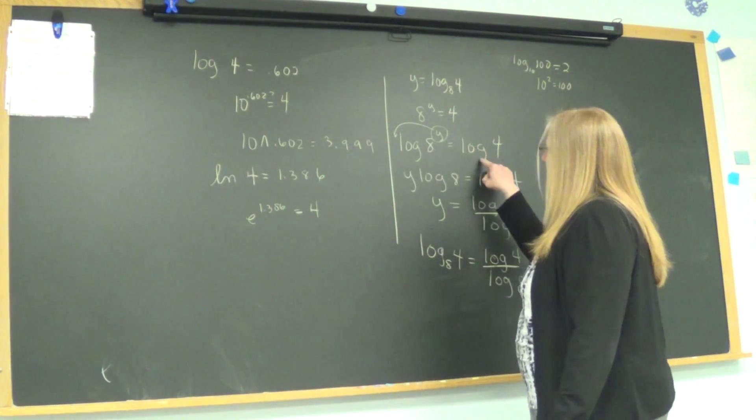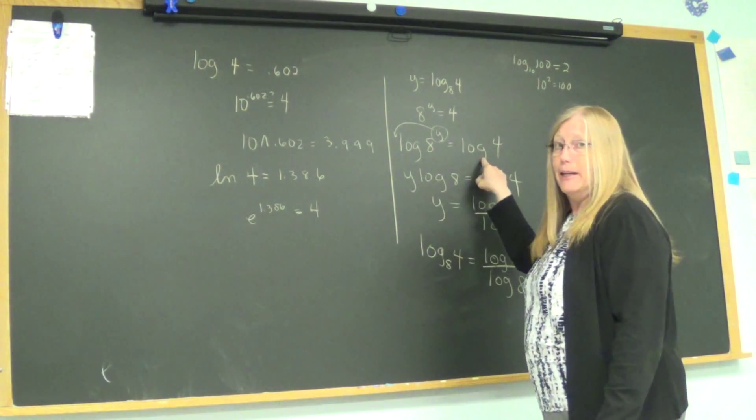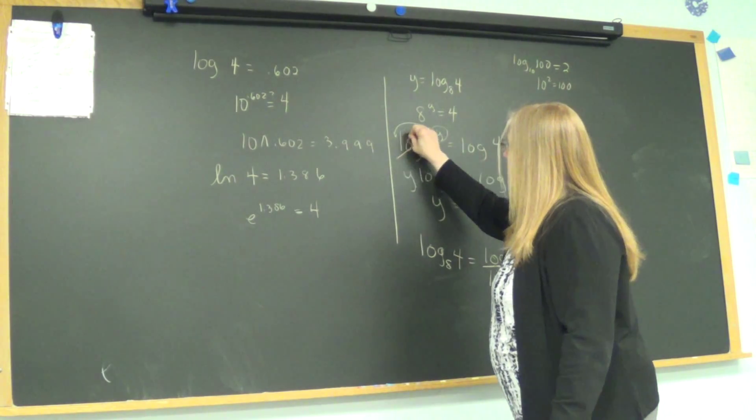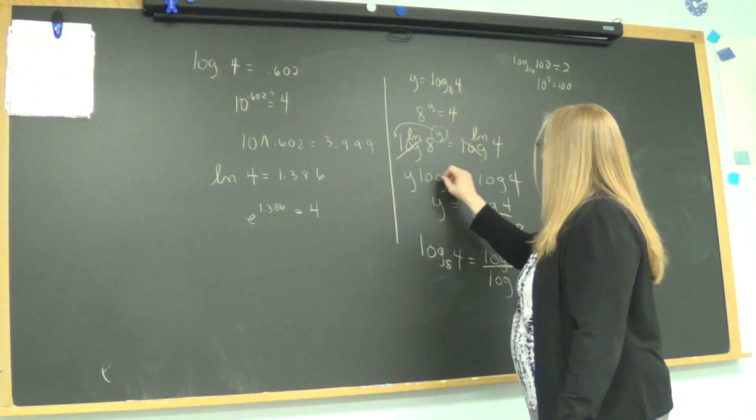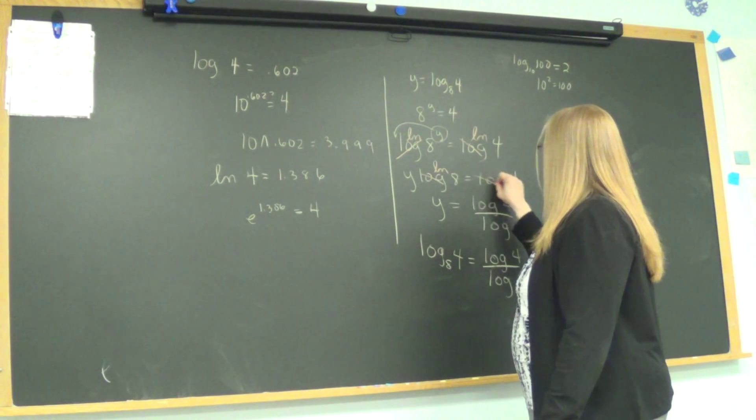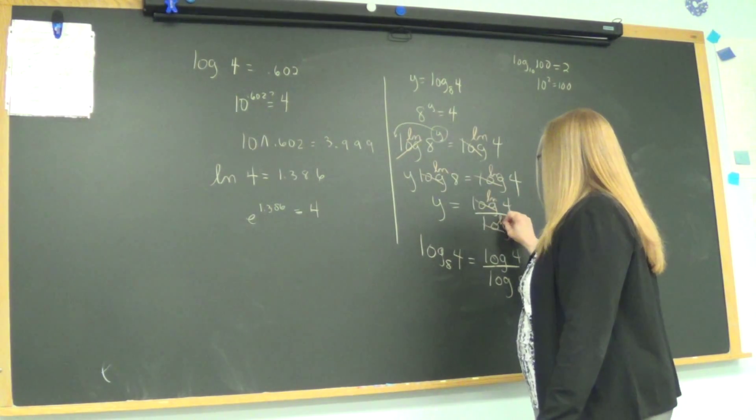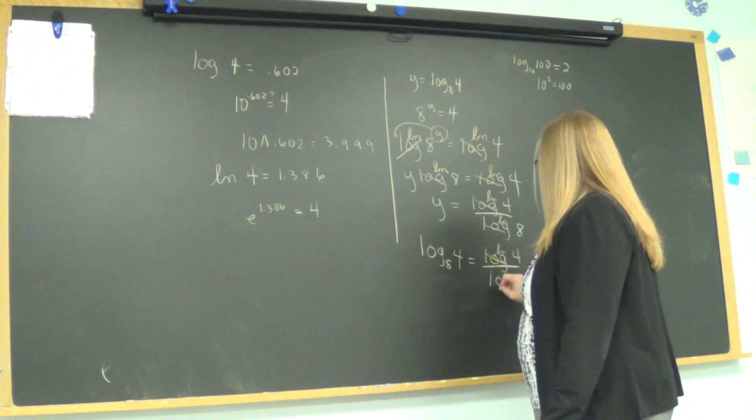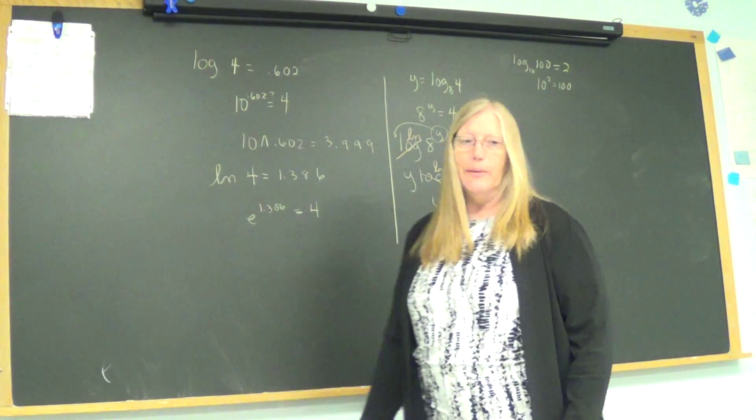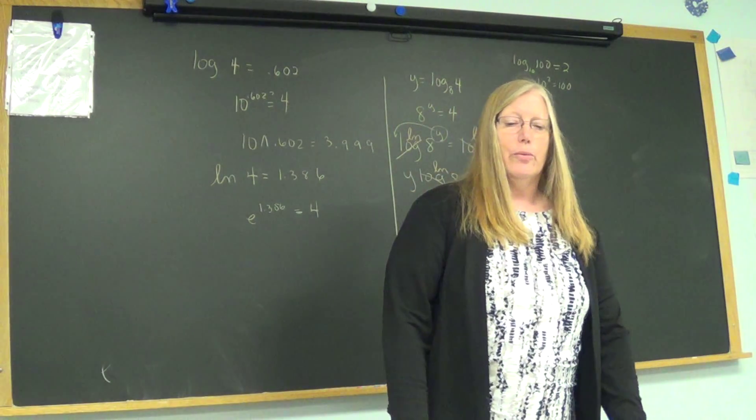Now back here, if I had taken the LN, that's another logarithm I know, instead of log, this work would look identical except at the end I would have LN of 4 over LN of 8. So which one is the right one? We can do either one.